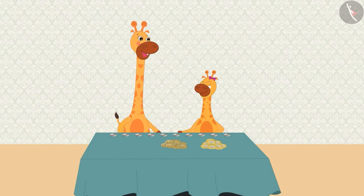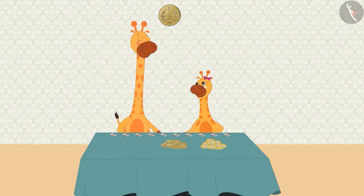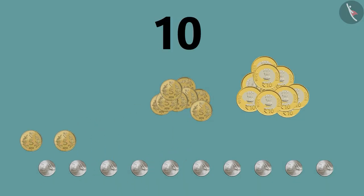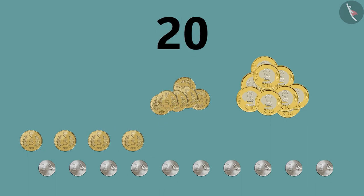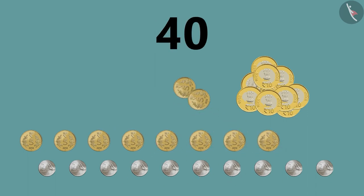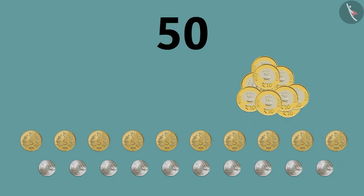Now just like this, we will count the 5-rupee coins. Gaffee starts to count: 5, 10, 15, 20, 25, 30, 35, 40, 45, and 50.